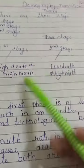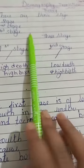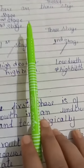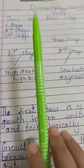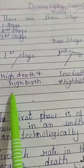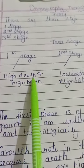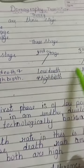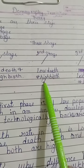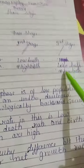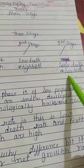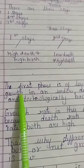Welcome back to Large World Channel. Today we will study the Demographic Transition Theory stages. What are these three stages? First stage, second stage, and third stage. In the first stage: high death and high birth. In the second stage: low death and high birth. In the third stage: low death and low birth.